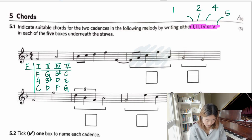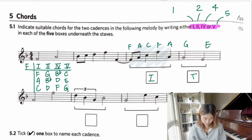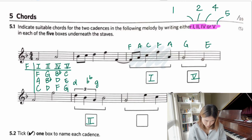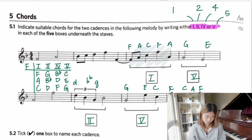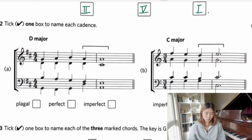Looking at the measures: the first measure contains F, A, C, F, A — so that's chord I. Next we have G and E — that gives us G and E, which fits chord V. Then G, B flat, D, B flat, G, B flat — that's chord II. Then G, E, C, C, E, G — chord V. Then F, C, A, F — chord I. Once you have the table done, you get the answers instantly.